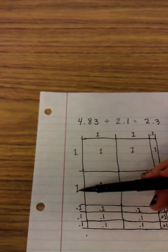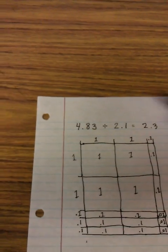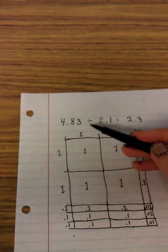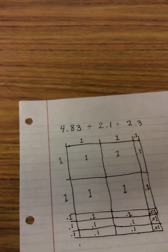So I've got one, two, and three tenths. So my answer to 4.83 divided by 2.1 is 2.3.